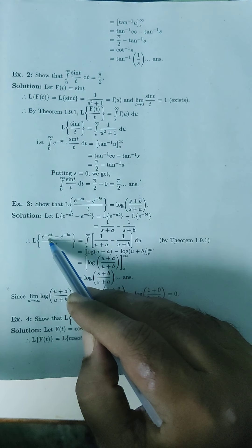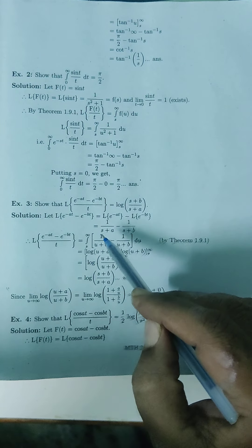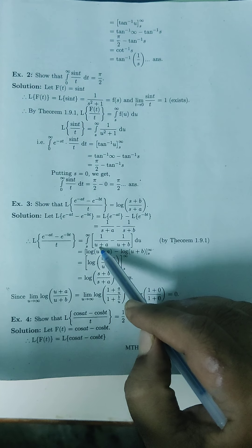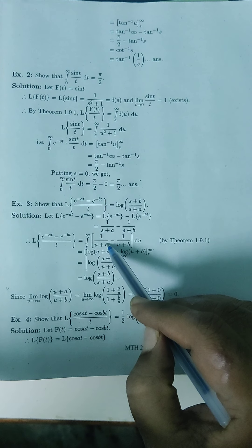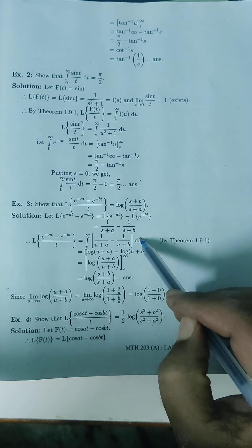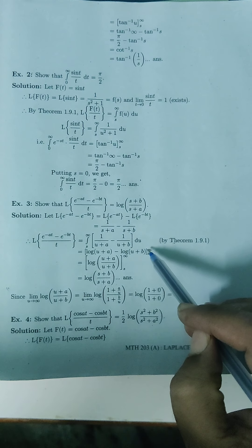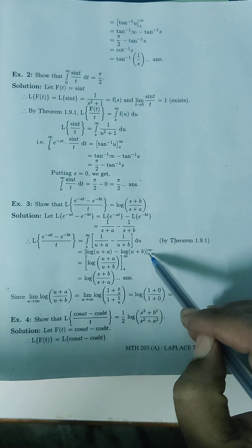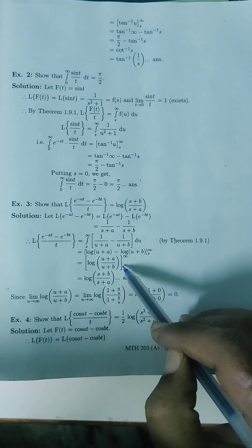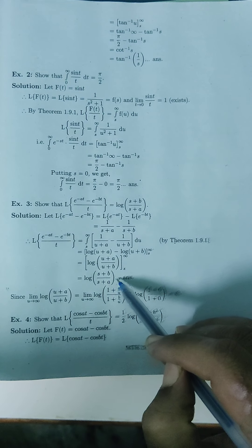Therefore, Laplace of (e^{-at} - e^{-bt})/t equals integration from s to infinity of [1/(u+a) - 1/(u+b)] du. The integral of 1/(u+a) du equals log(u+a), and the integral of 1/(u+b) du equals log(u+b), since the derivative of (u+a) is du (a is constant). Therefore we get log(u+a) - log(u+b), which by logarithm law equals log((u+a)/(u+b)), evaluated from s to infinity. The answer is log((s+b)/(s+a)).